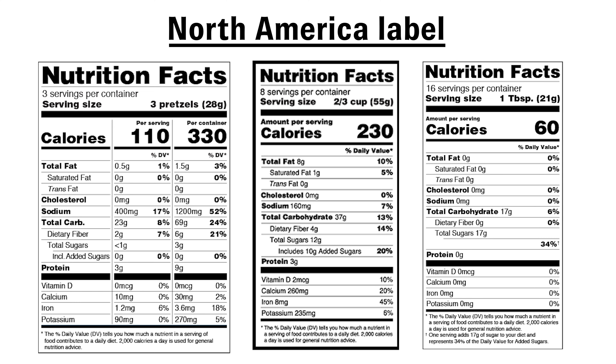The United States took another approach. They didn't write joules on the label, but the word calories is written with a capital C. This capital C is a way of saying kilocalories in the US and in Canada as well. For the context of this video, I will keep saying calories, but what I actually mean is kilocalories.